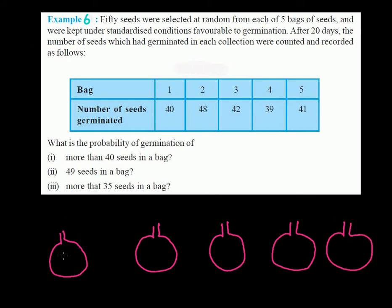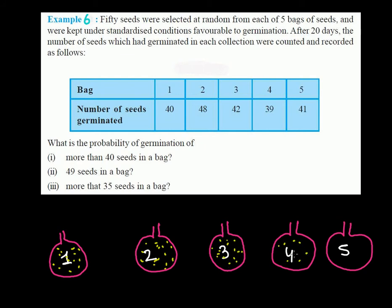We have bag number 1, bag number 2, bag number 3, bag number 4, and bag number 5. In each bag there were 50 seeds.